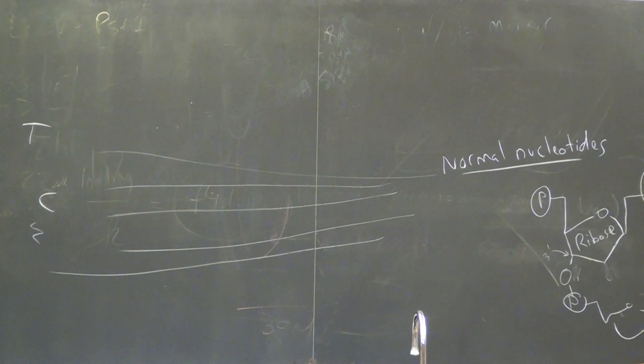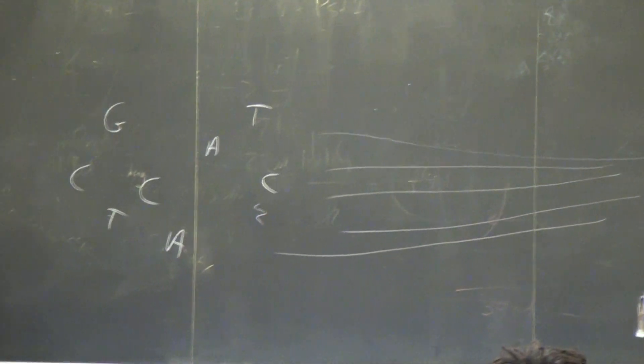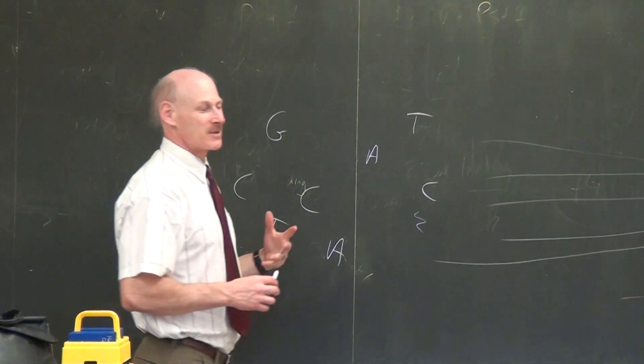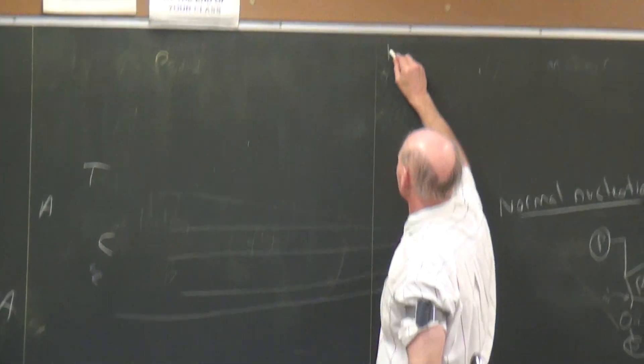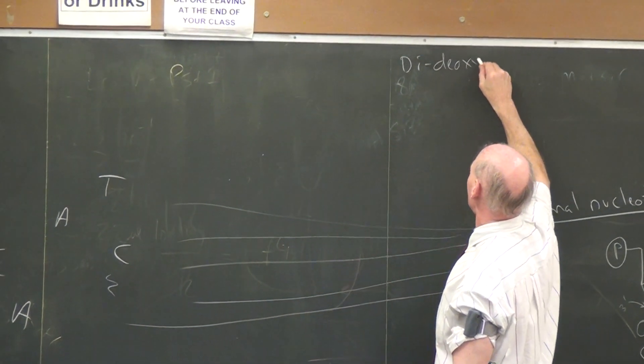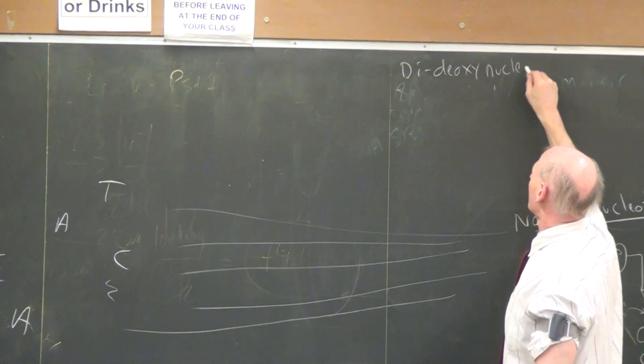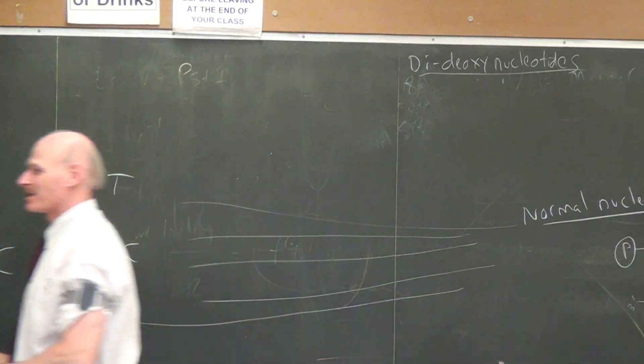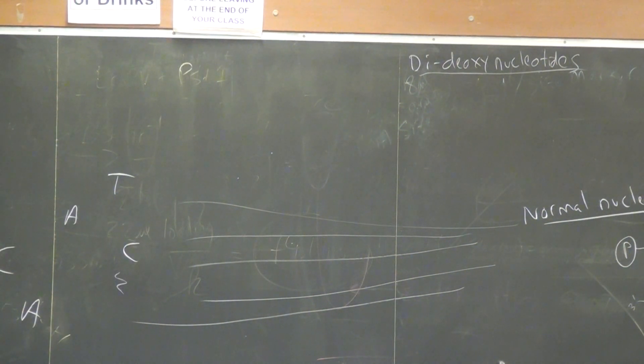So anyway, most of the nucleotides that you put in your DNA sequencing mixture are the good old normal type, like these guys here, but a few of them, a small percentage of them that you mix in your tube, are what they sometimes call dideoxynucleotides. A small number of DNA nucleotides in your mixture are artificially modified; they're missing that three prime OH group.